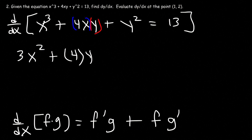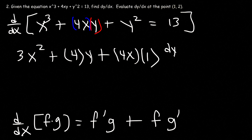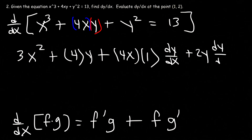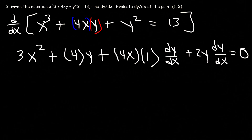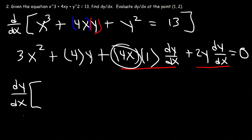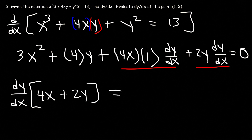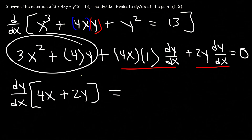Plus the first part 4x times g prime, the derivative of y. The derivative of y with respect to x is 1 times dy/dx. And the derivative of y squared is going to be 2y dy/dx. The derivative of the constant 13 is 0. Out of these two terms, I'm going to factor out dy/dx, giving 4x plus 2y. Every term that doesn't have a dy/dx, I'm going to move to the other side. So I'm moving 3x squared plus 4y to the right side.